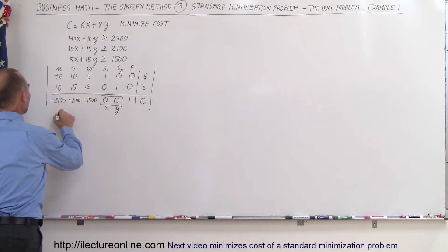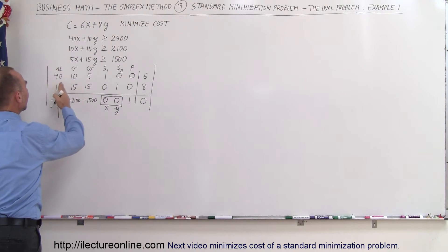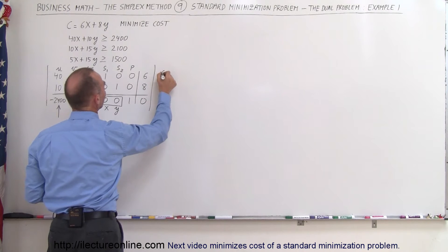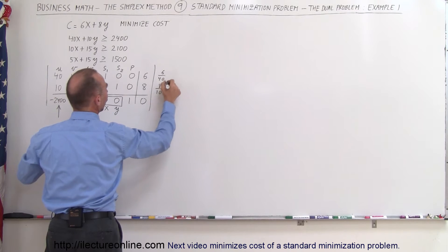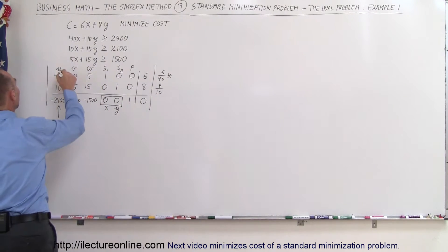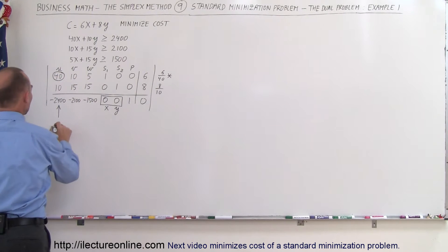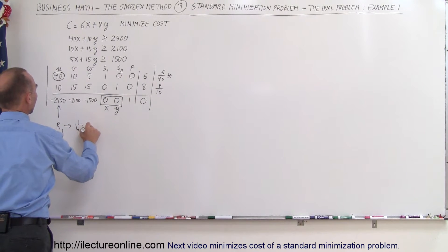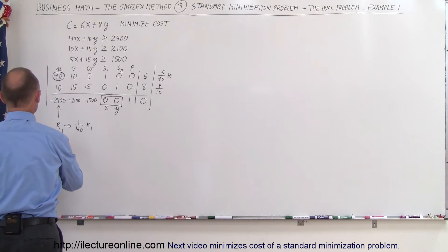We find the largest negative number in the third row, then look at the ratios to determine which element to pivot around. So 6 divided by 40, or 8 divided by 10 — and 6 divided by 40 is obviously a smaller number than 8 divided by 10. So we're going to pivot around this number, which means we need to turn it into a 1. We do that by taking the first row and changing it to 1/40th of the first row — basically divide the whole first row by 40. When we do that we get the following result.